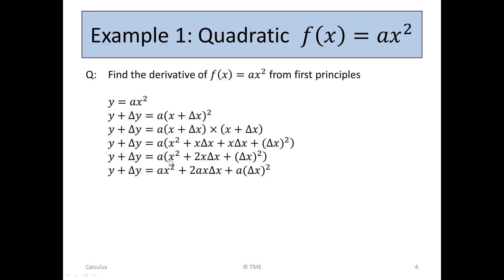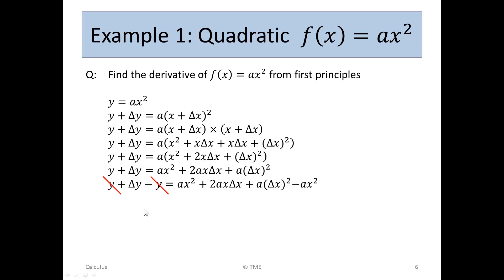Working within the brackets, we can now say: ax squared, 2ax delta x, and a times delta x squared. So y plus delta y equals all of that. Then y plus delta y minus y is all of that minus the value we had for y, which is minus ax squared.